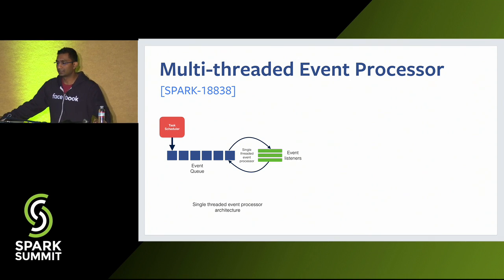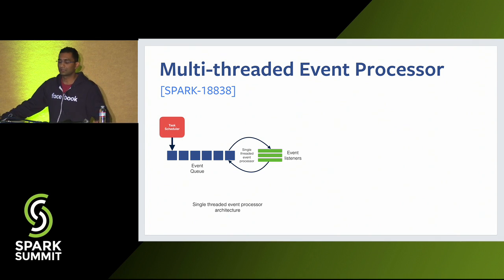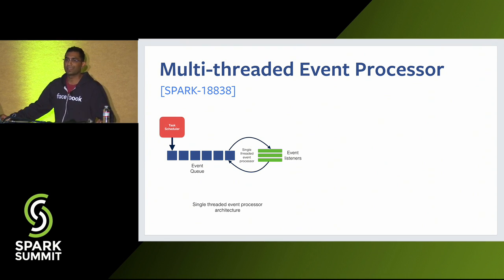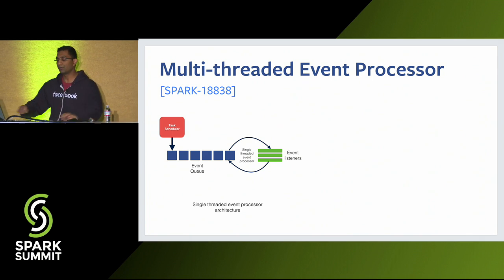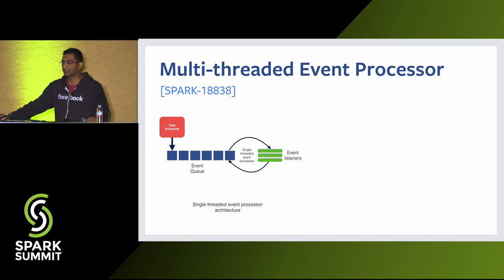The Spark scheduler architecture is event-driven: the scheduler generates events such as task start and task end events, and different components of the driver implement the listener interface to take action based on those events. The event processor is currently a single-threaded entity which loops through all listeners and processes events synchronously. While running jobs with many tasks in parallel producing a large number of events, the single-threaded architecture can easily become the bottleneck, and event processing latency can be up to several minutes, which can fail the job.